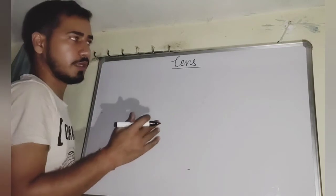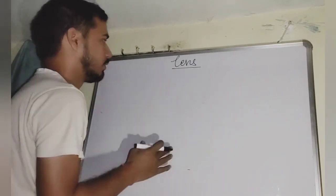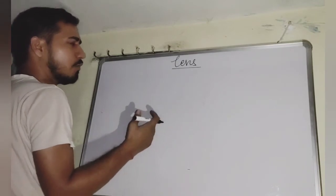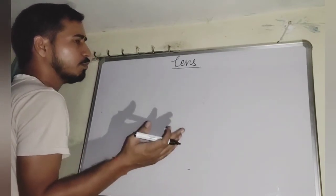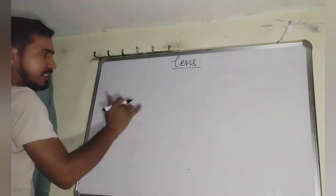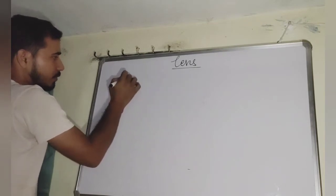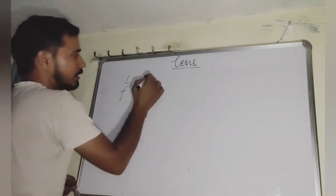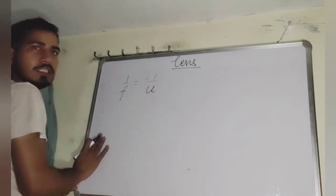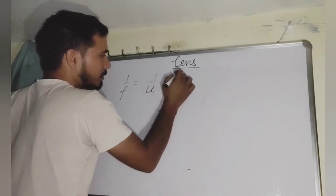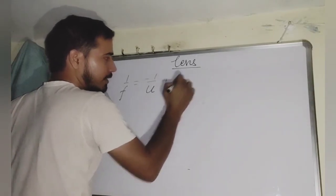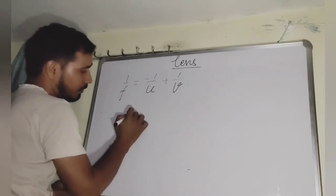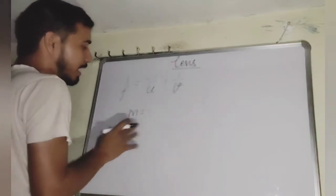As in the case of a mirror, we have a lens equation. The relation between f, u, and v — where f is the focal length, v is the image distance from the optical center, and u is the object distance from the optical center — is the lens equation: 1/f = −1/u + 1/v.